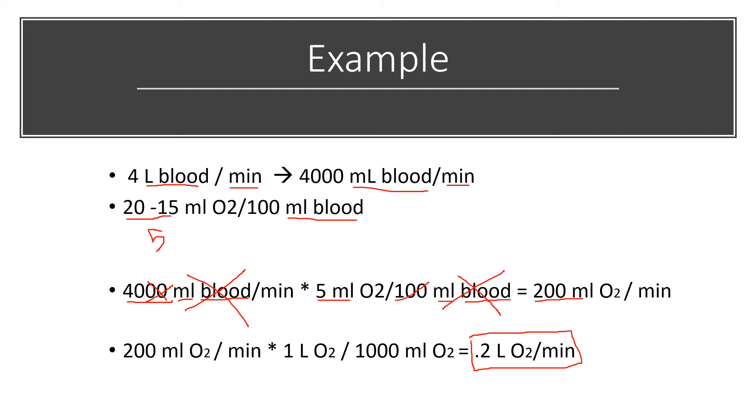What we found is that this individual's VO2 is 0.2 liters of O2 per minute. That seems pretty low, and that makes sense, because this person is at rest and is not exercising. Let's take a look at what exercise will do to your VO2 and how that relates to your Fick equation values.